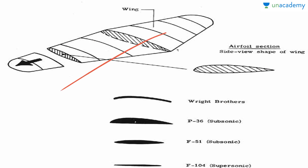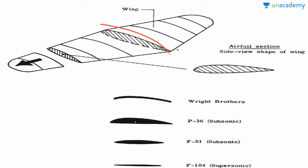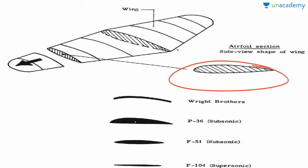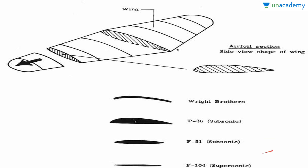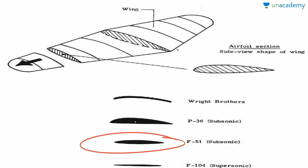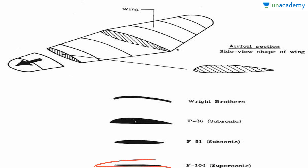Here you can see the cross-section view of the wing — it is an airfoil. These are a few wing designs: the Wright Brothers' design, the P-36 subsonic design, the F-51 subsonic design, and the F-14 supersonic design.